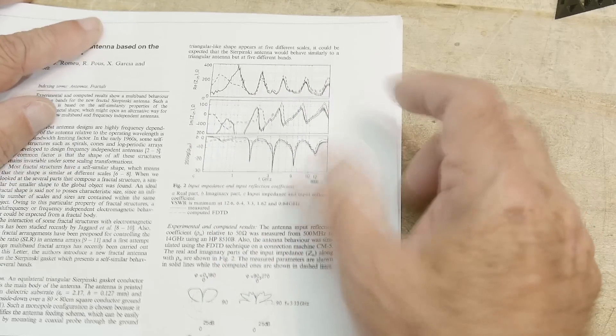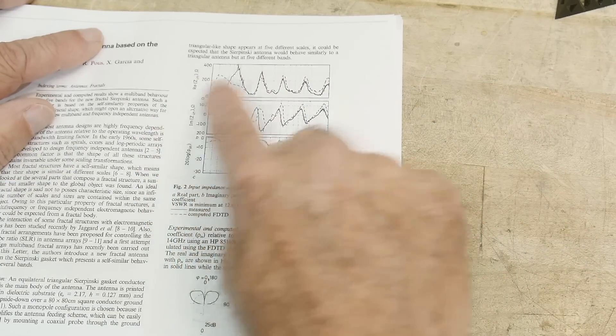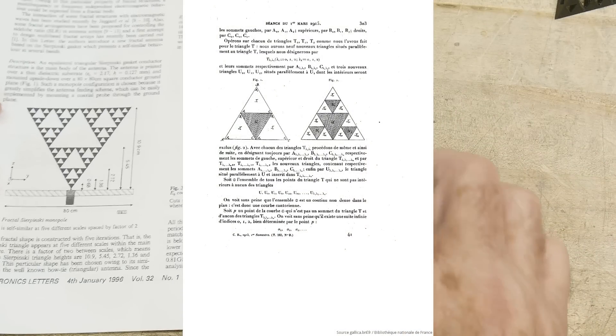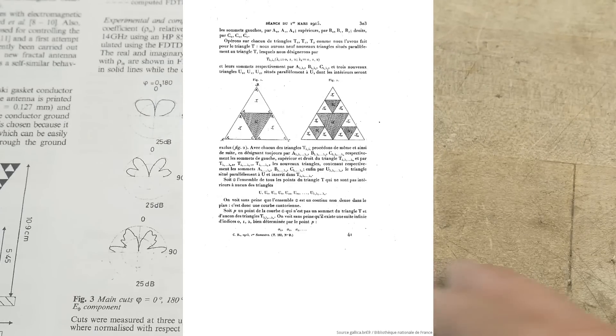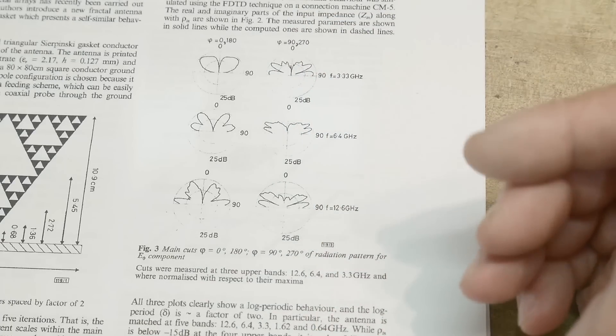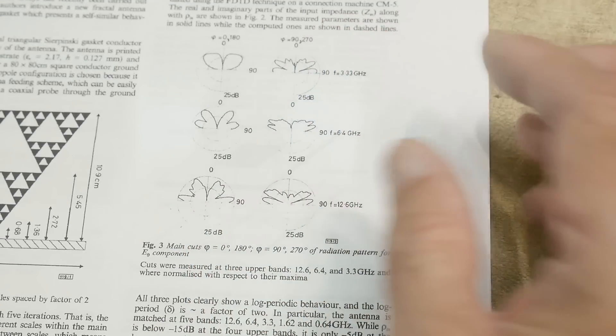So this is from 0 to 12 gigahertz and you can see that it's resonant at certain places. It's going to have a really weird radiation pattern depending on frequency and direction and stuff. So it is a very strange antenna.